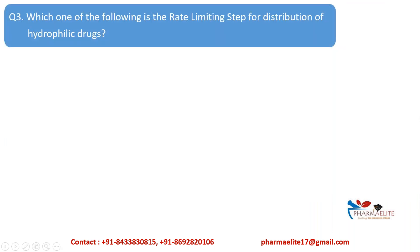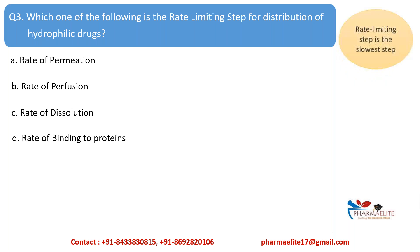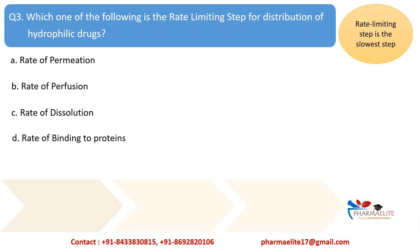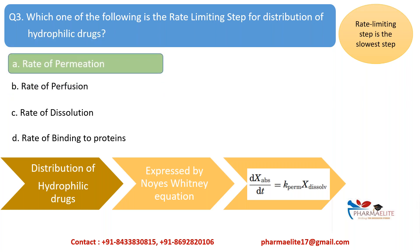The third question is: which of the following is the rate-limiting step for distribution of hydrophilic drugs? The rate-limiting step is the slowest step. The distribution of hydrophilic drugs is expressed by the Noyes-Whitney equation. In this equation, dX/dt is the distribution rate of drug, A is the permeation constant, and X is the amount of drug dissolved. Since the equation includes the permeation constant, the answer is straightforward — option A: rate of permeation.